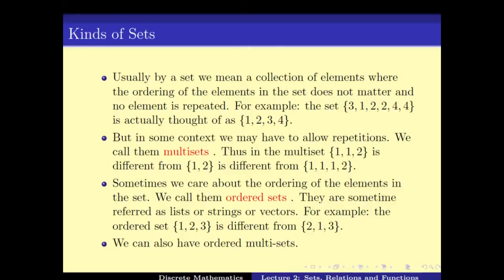So in the first example, if I tell you the set comprises of elements 3, 1, 2, 2, 4, and 4, it is exactly the same as the set containing 1, 2, 3, and 4. The repeated elements of 2 don't matter and similarly the ordering doesn't matter. But in certain contexts we might have to use these repetitions — these are called multi-sets. A multi-set is a set where repetitions matter.